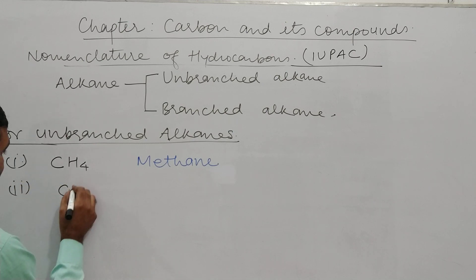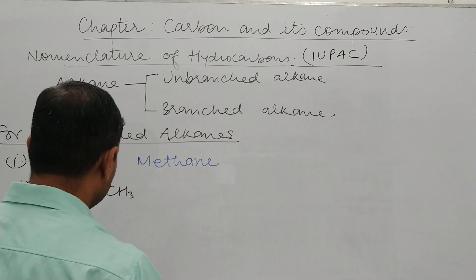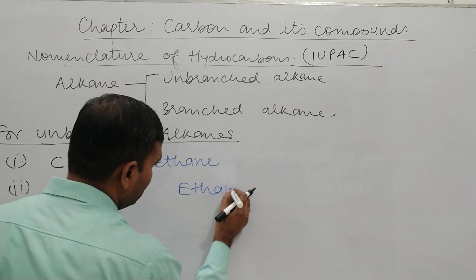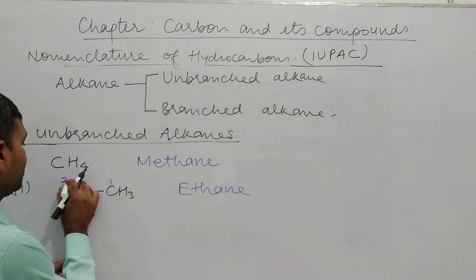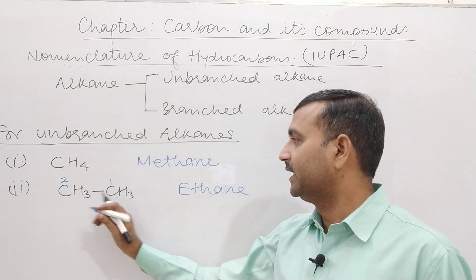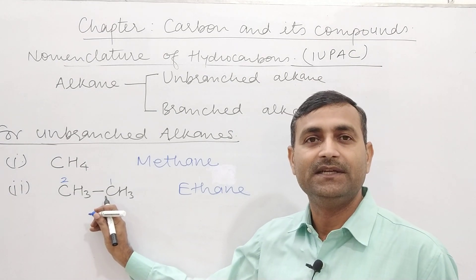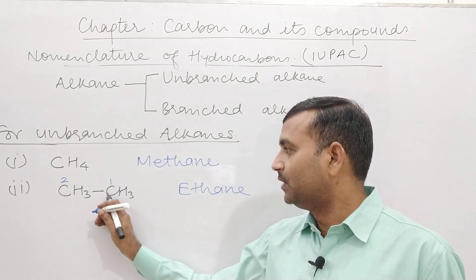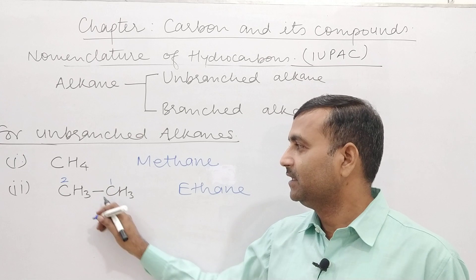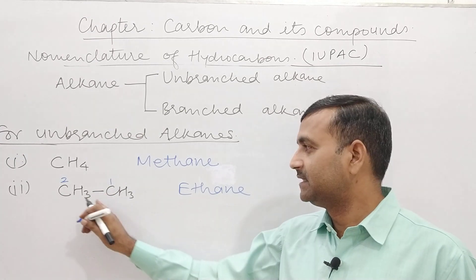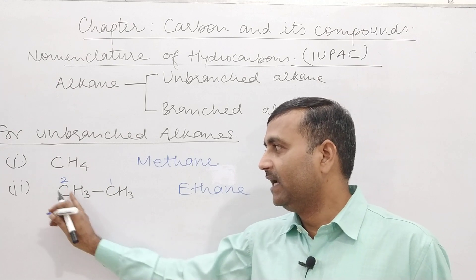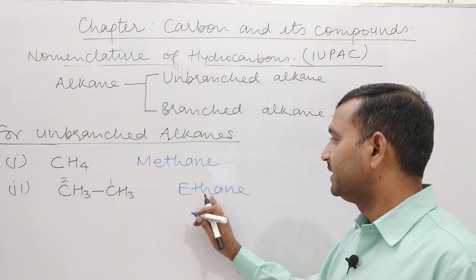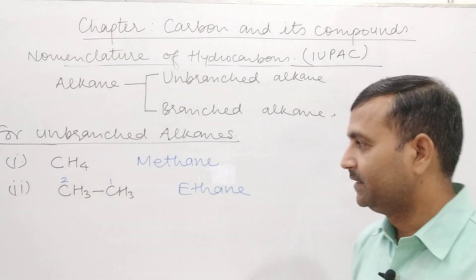The second compound is C2H6 (CH3-CH3). यहाँ पर two carbon atoms हैं, and there is a single bond between the two carbon atoms. So the word root is 'eth', suffix is 'ane' — this is called ethane.